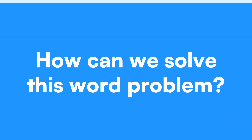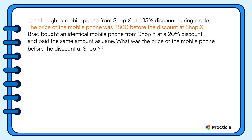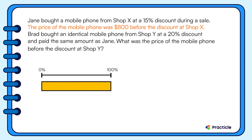After reading this problem, you'll find that we are basically comparing two things: the price of the mobile phone in ShopX and ShopY. Let's take a look at how much Jane paid for her phone first. What do we know? We know that the price of the mobile phone before the discount was $800, but how much did she really pay for the phone in the end? Well, that depends on how much discount Jane received.